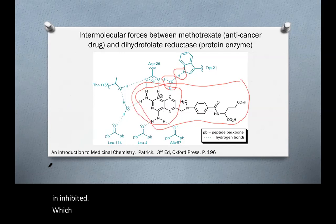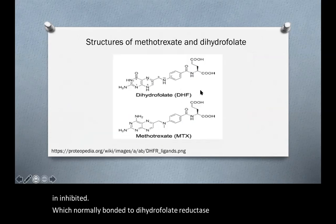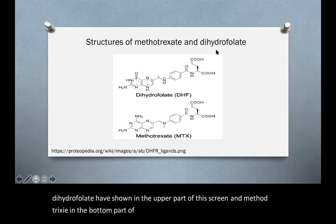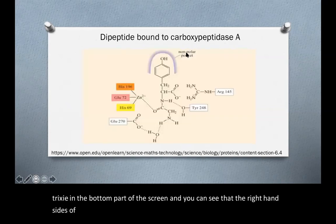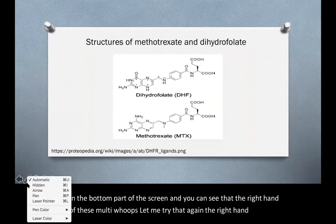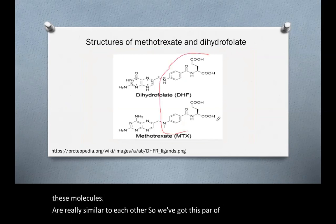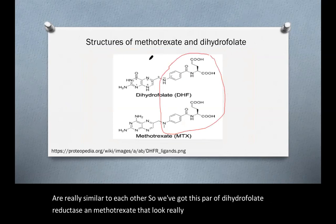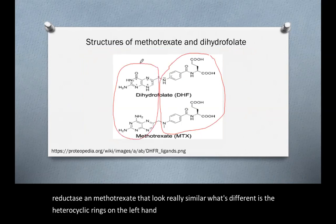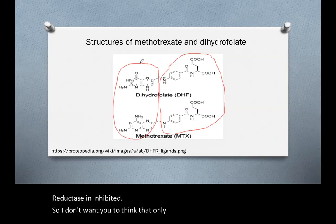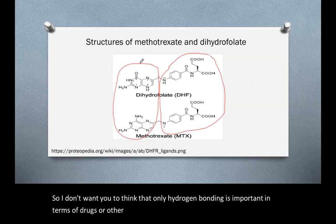What's normally bonded to dihydrofolate reductase is dihydrofolate. Comparing dihydrofolate and methotrexate, the right-hand sides of these molecules are really similar to each other. What's different is the heterocyclic rings on the left-hand part, and that allows methotrexate to actually bind into the active site of dihydrofolate reductase and inhibit it.